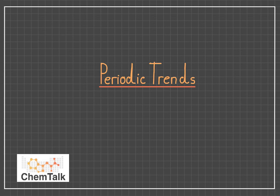Hello, and welcome to ChemTalk. Today, we'll be talking about some of the most important trends that chemists regularly use to determine the most likely properties of atoms. In particular, electronegativity, atomic radius, electron affinity, ionization energy, and metallic character.